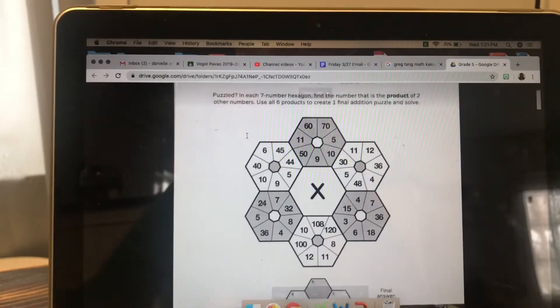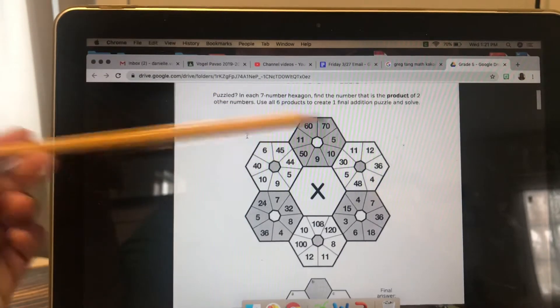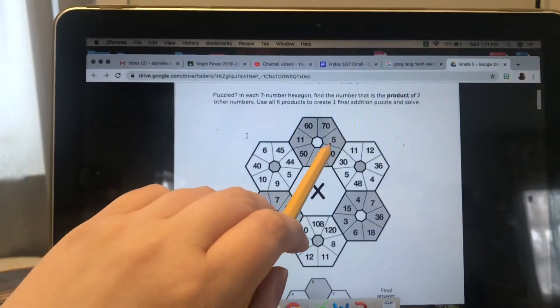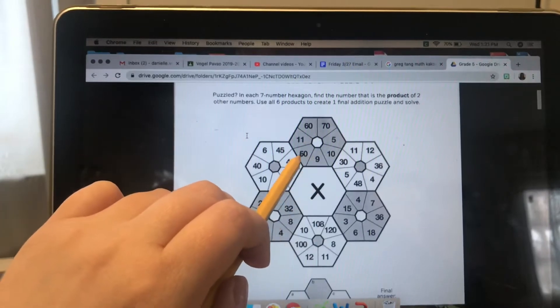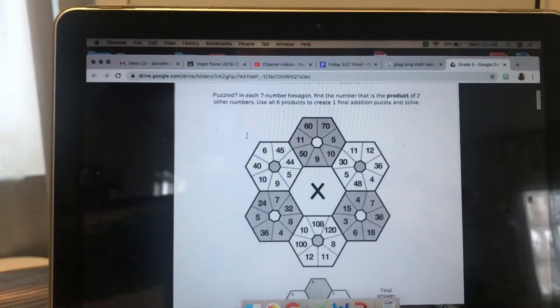Using the numbers inside the hexagon, I need to come up with a multiplication equation. So I know that 5 times 10 equals 50. So the product for my first hexagon is 50.